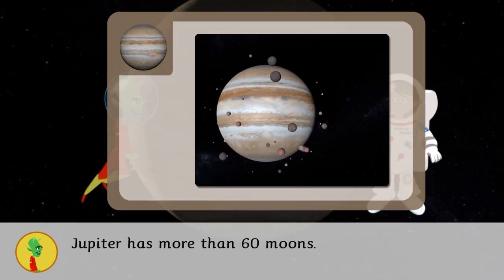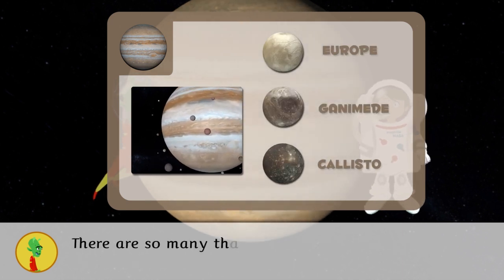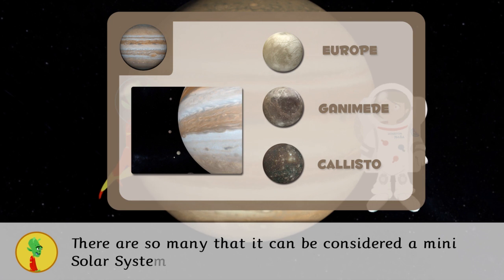Jupiter has more than 60 moons. The most famous are Europa, Ganymede, and Callisto. There are so many that it can be considered a mini solar system.